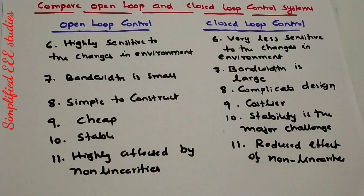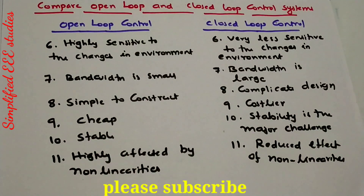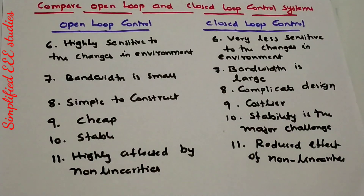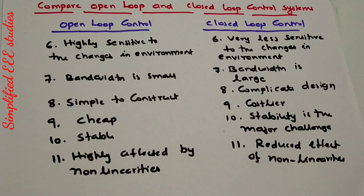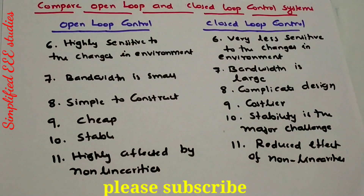So these are the comparisons between open loop control system and closed loop control system. We have discussed almost 11 points. I think you could understand the difference between the two systems clearly. If you have any doubts, you can put them in the comment box. Thanks for watching this video — please share and don't forget to subscribe. Thanks again.